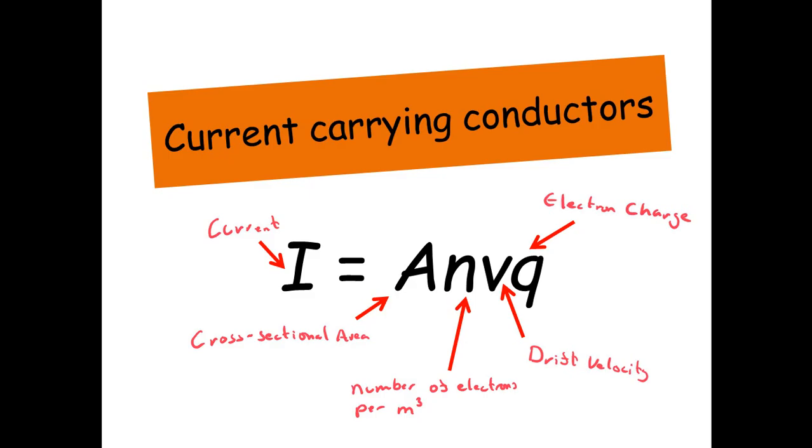Next up we've got V. Now be very careful, V is not voltage. It's the average drift velocity in meters per second of the electrons in the wire as they're moving. And then Q is the electron charge, just the charge for one of these electrons, 1.6 times 10 to the minus 19 coulombs.